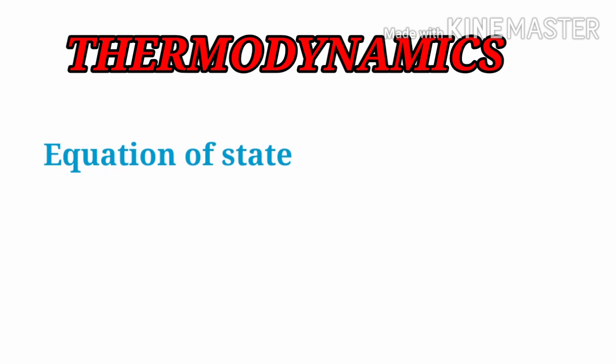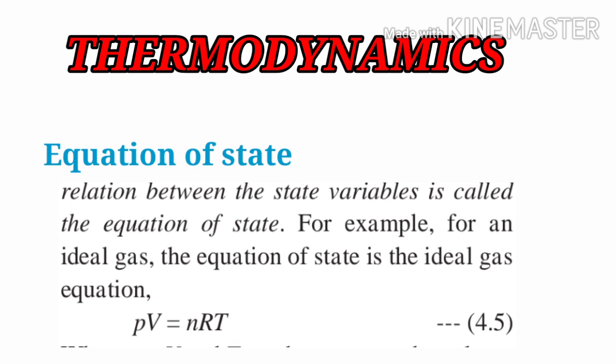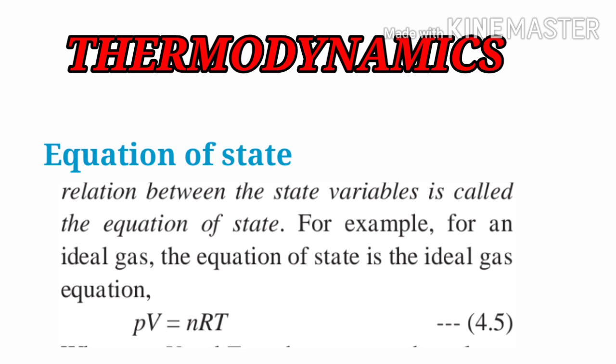Now we will see the equation of state. The equation of state is defined as the mathematical equation or the mathematical relation between the state variables. For example, for an ideal gas, the equation of state is the ideal gas equation, which is PV = nRT.